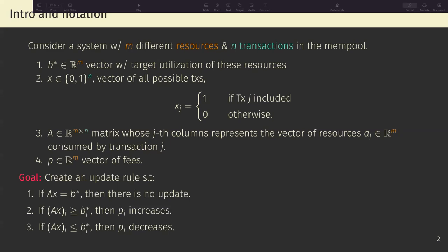So what is the goal of their paper? They want to create an update rule such that if our expenditure is equal to the target expenditure, then there is no update. If we are spending more of the resource i than the target of resource i, then we increase the price of that resource. And similarly, if we are underspending, if we're spending less of resource i than its target, then we decrease the price of that mechanism. And this is quite similar to the EIP-1559, it's quite similar to the mechanisms designed that Axe has been working on, this adjustable block size.